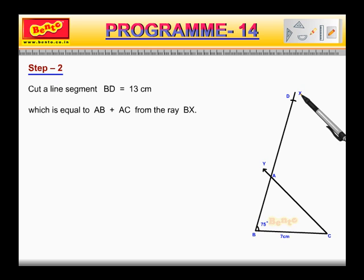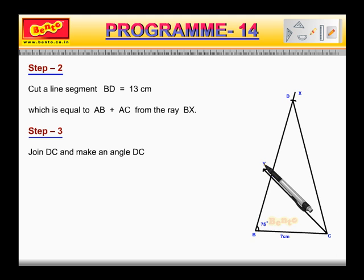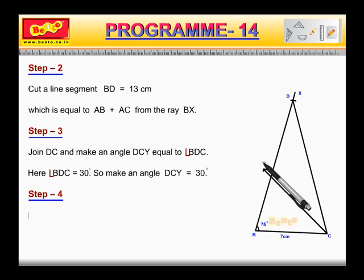Step 3: Join DC and make an angle DCY equal to angle BDC. Here, angle BDC is equal to 30 degrees, so make an angle DCY equal to 30 degrees. Step 4: Let CY intersect BX at A. Then, ABC is the required triangle.